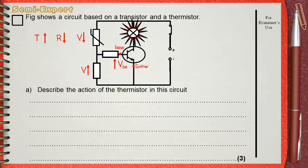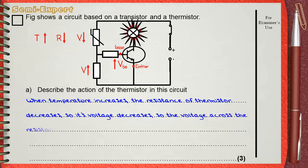We can formulate this in an answer as follows. When temperature increases, the resistance of the thermistor decreases. So its voltage decreases.